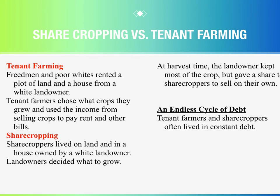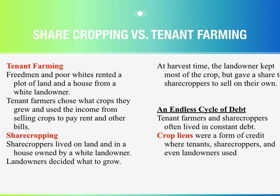Tenant farmers and sharecroppers often lived in constant debt. Crop liens were a form of credit where tenants, sharecroppers, and even landowners used crops to pay for supplies.